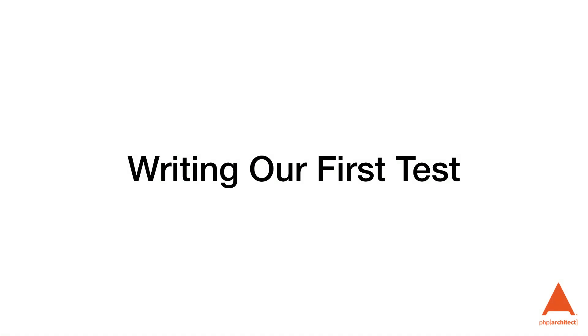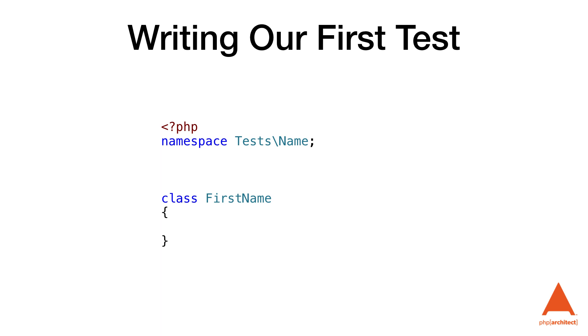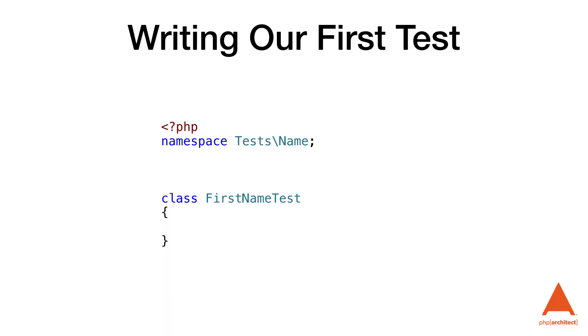PHPUnit organizes tests inside PHP classes. We can name our test classes any way we want as long as it's a valid PHP class name, but each class also needs to end with 'Test' or PHPUnit won't auto-load that file by default — this can be changed in the phpunit.xml file, but it's best to stick to the standard. The class also needs to extend the PHPUnit\Framework\TestCase class.